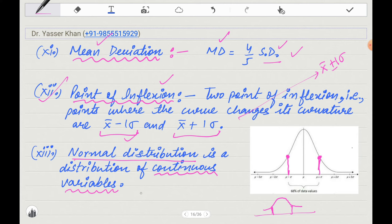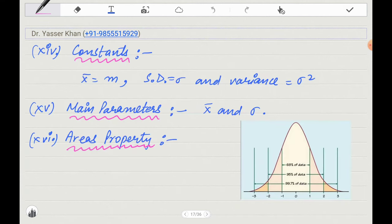Next is, normal distribution is distribution of continuous variables. This is used in those variables which are continuously changing. Constants, which means mean, standard deviation (small sigma), and variance, these are three constants for normal distribution. And what are the main parameters? Mean and standard deviation. Because I discussed in the previous video that mean and standard deviation determine the shape. If the mean and standard deviation changes, the shape can be changed.